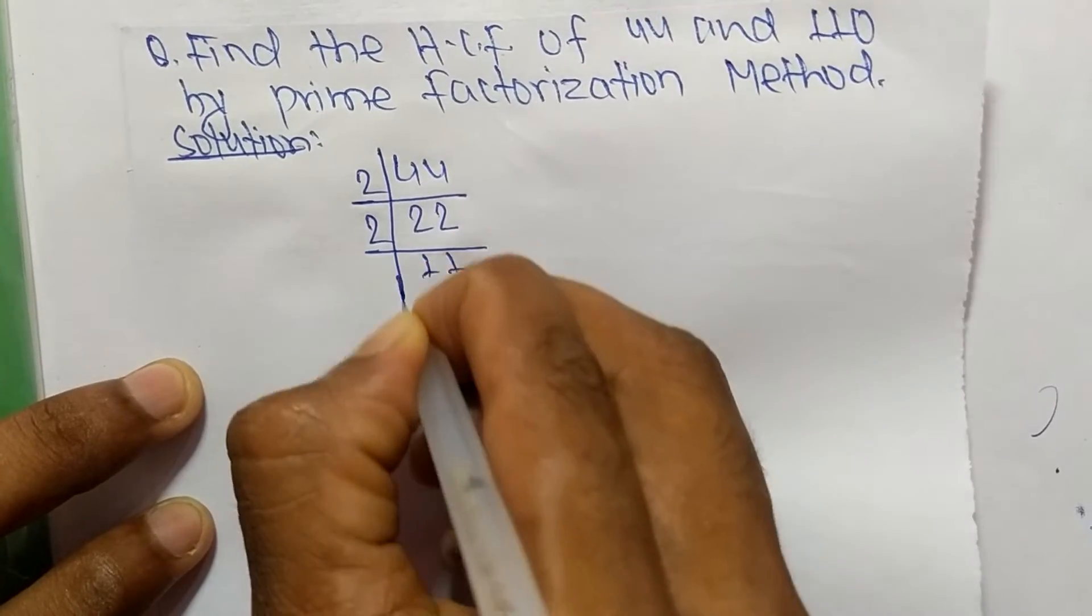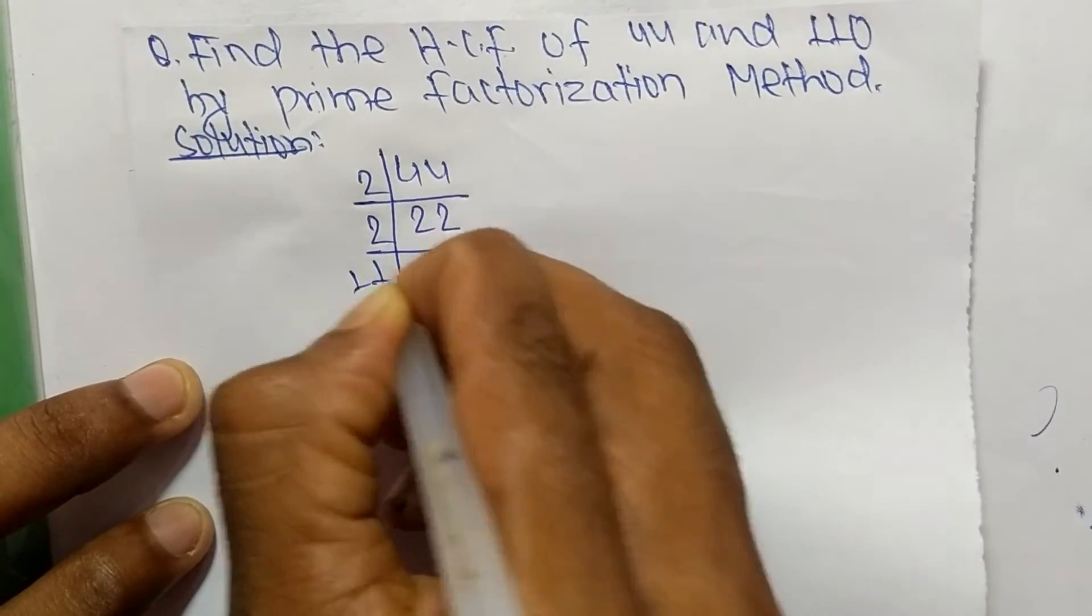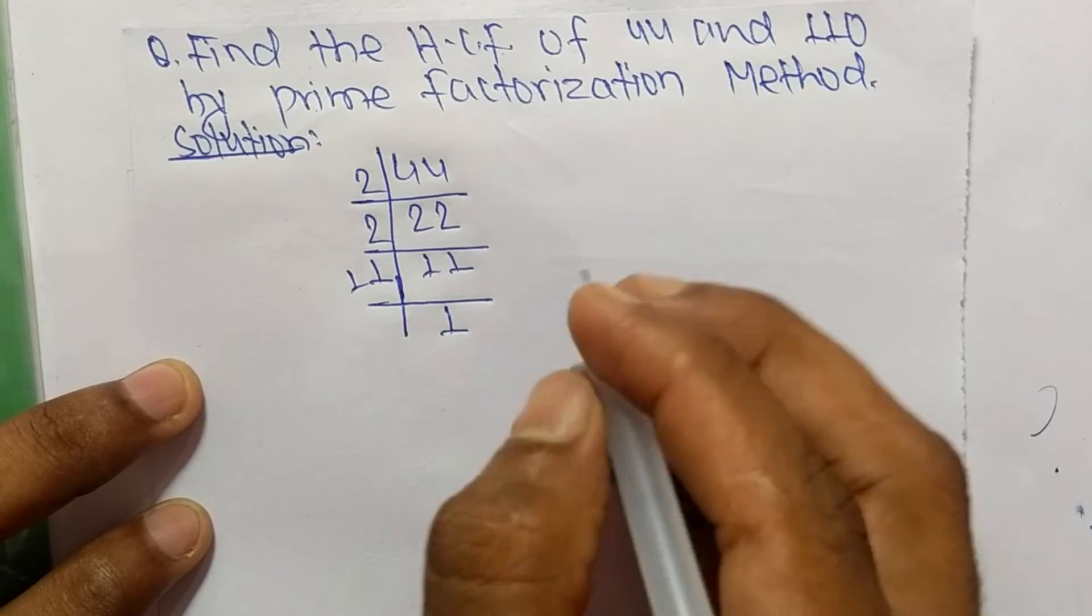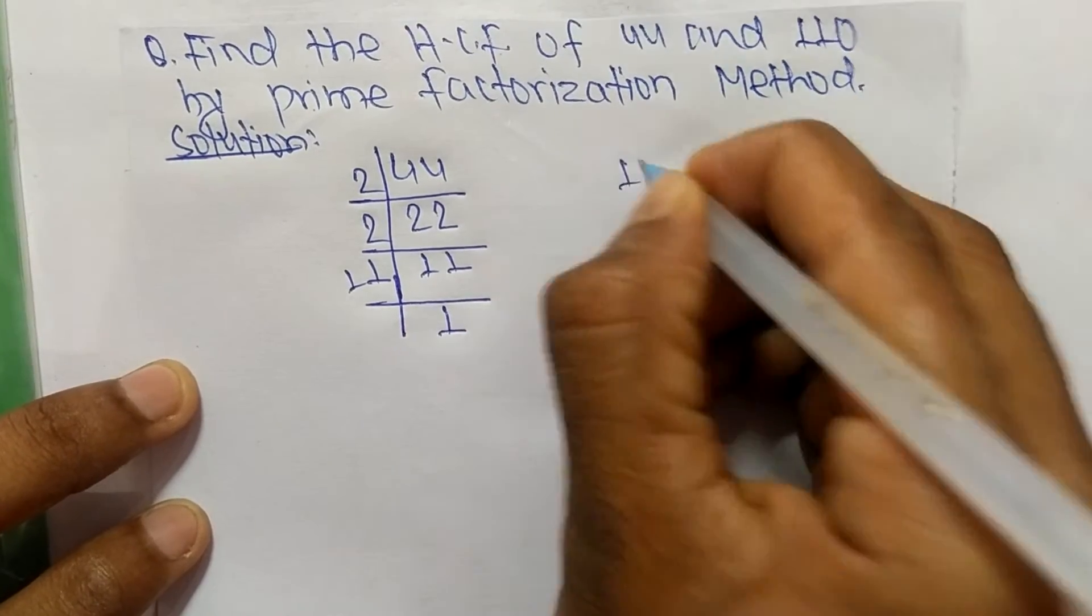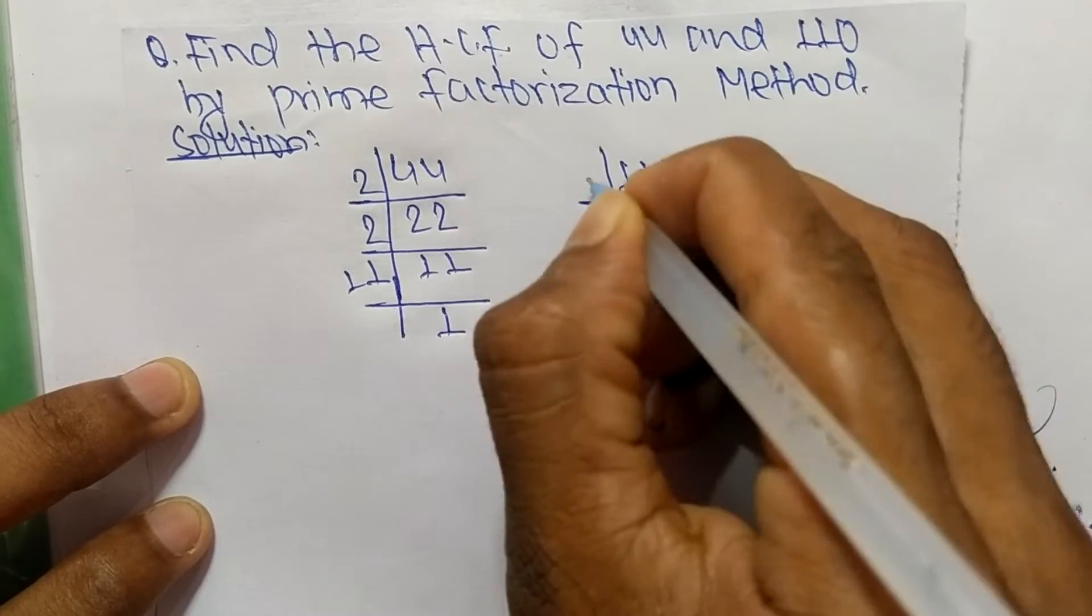times 11 means 22, and 11 times 1 means 11. Likewise, the prime factors of 110 are: